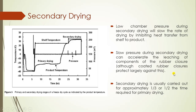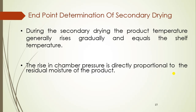Secondary drying is usually carried out for approximately one-third to half of the time required for primary drying. For endpoint determination of secondary drying, the product temperature generally rises gradually and equals the shelf temperature. The rise in chamber pressure is directly proportional to the residual moisture of the product, so an increase in chamber pressure indicates that moisture is still present in the product.